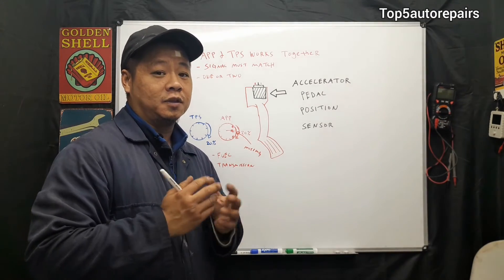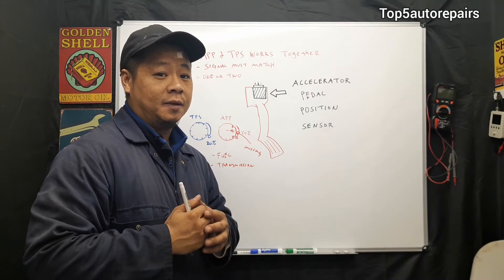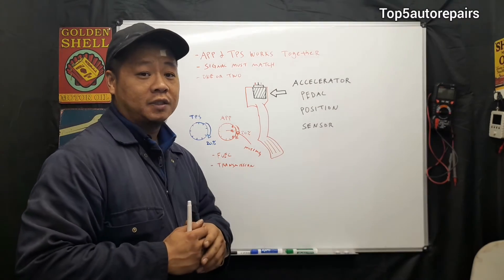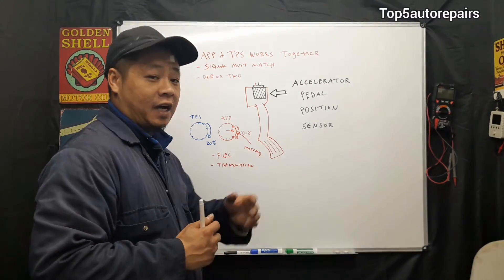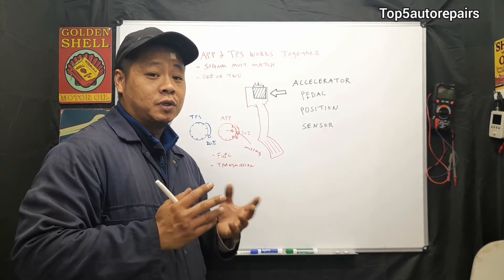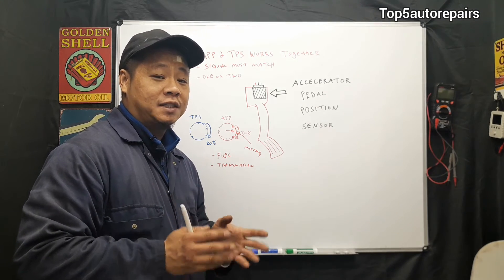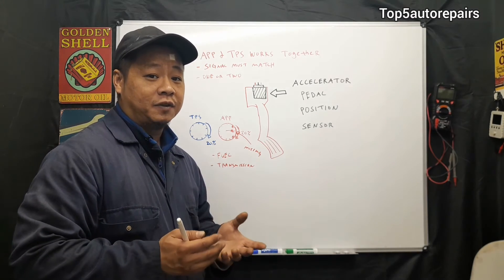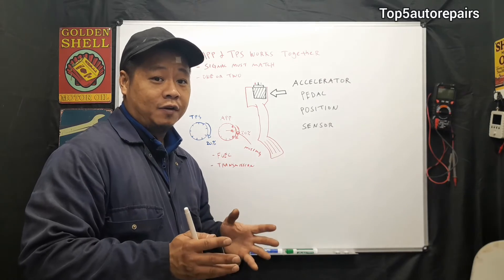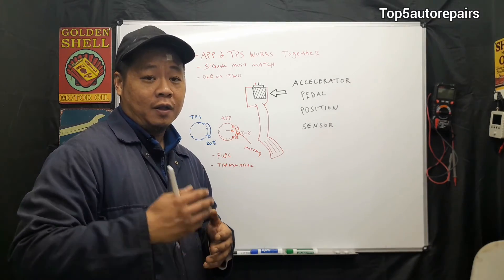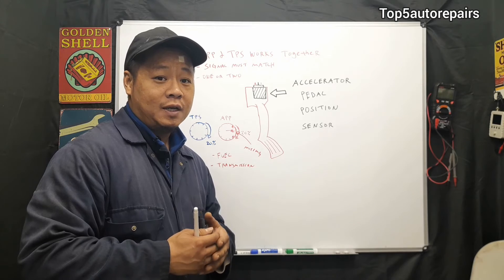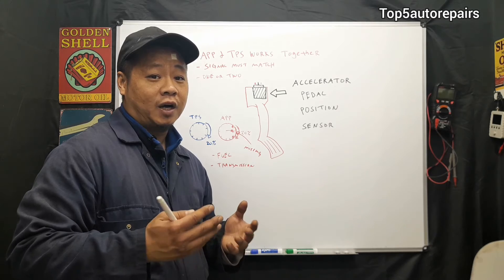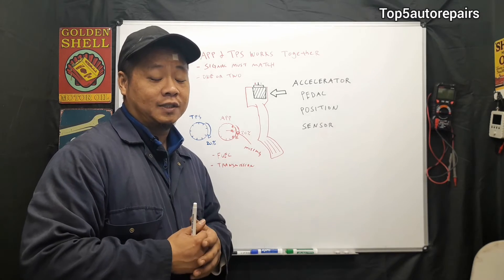The second most common symptom you may experience is limp mode. If you've got more than one worn contact point, the computer may not know the current position of the gas pedal, which is extremely dangerous. The computer will automatically set the vehicle into limp mode. Limp mode is a safety feature that protects the driver from exceeding a certain speed, let's say 35 miles per hour, and limits the gears to about second gear. It's enough speed to drive to the auto shop and get your car checked out and fixed.